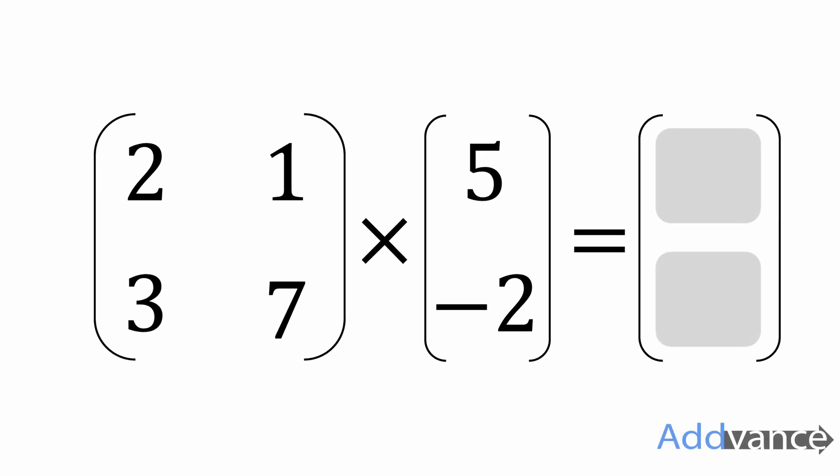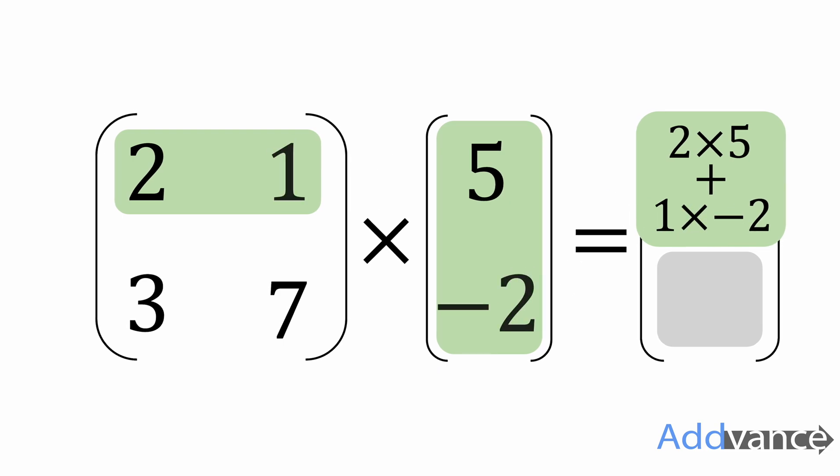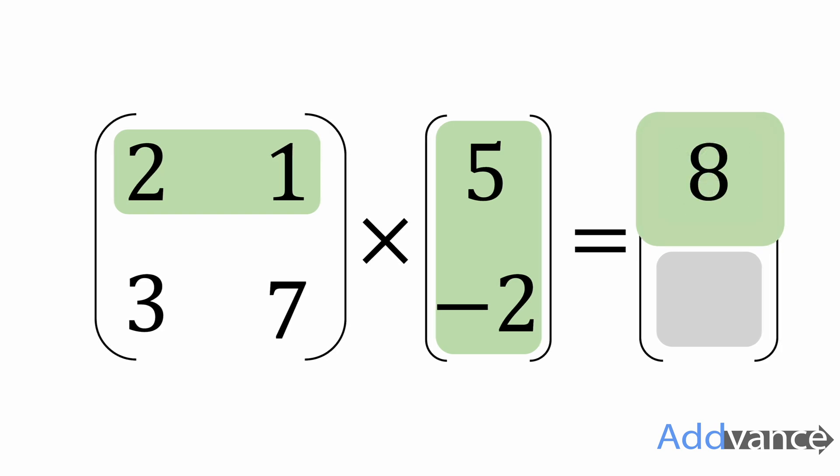So to work out this matrix times this vector, we're going to multiply the top row by the column and that will give us the top number. And to do that, we're going to do 2 times 5 and then we're going to do 1 times minus 2. I'm going to add those two values together. 2 times 5 plus 1 times minus 2 gives me a value of 8.